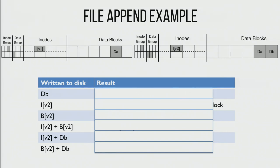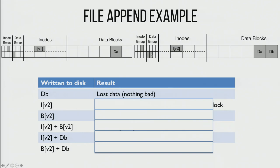Now imagine we write out the inode but don't write out the bitmap or the data block. We have a new inode pointing to a data block we have not written, and we haven't updated the data bitmap. So we're going to be pointing to garbage — whatever old data was there. That's one bad thing. We wrote out this new inode pointing to garbage without flipping the bitmap.